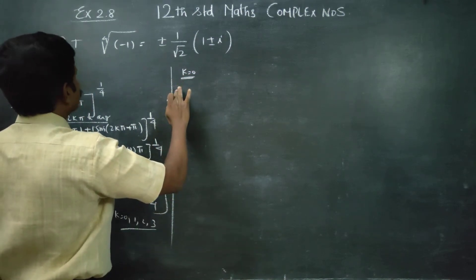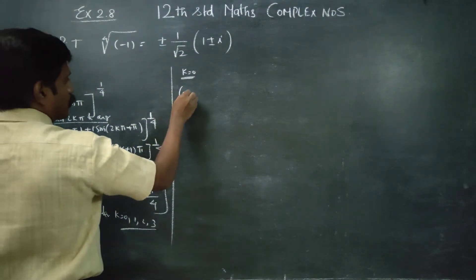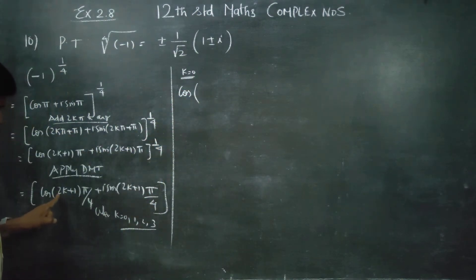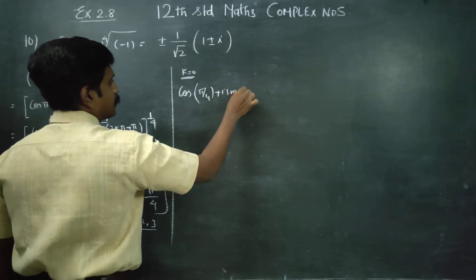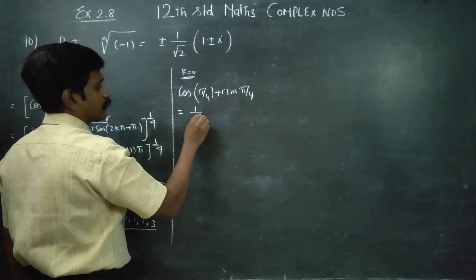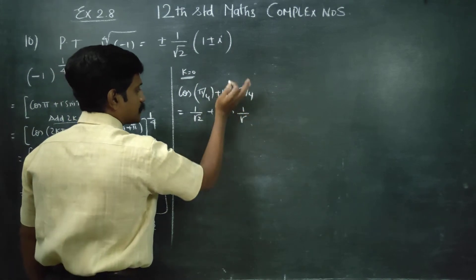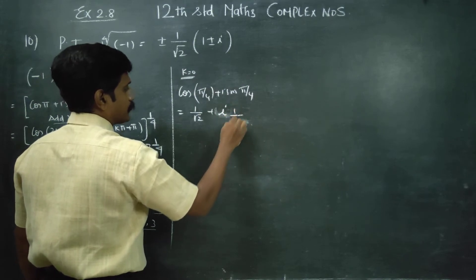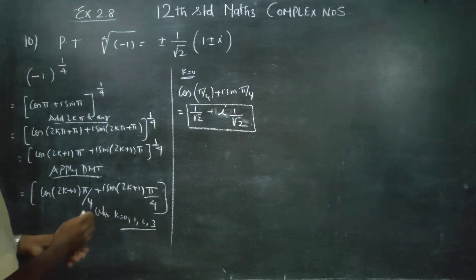For k = 0: the first root is cos(π/4) + i·sin(π/4). cos(π/4) = 1/√2 and sin(π/4) = 1/√2. So the first answer is 1/√2 + i·(1/√2).